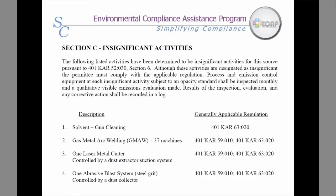Section C lists the insignificant activities. Insignificant does not mean they can be forgotten about — you may still have requirements to report them in your EIS and list them on your semiannual and annual reports. As stated in the permit text, the permittee must comply with regulations, and processes and emission controls subject to the opacity standard shall be inspected monthly with qualitative visible emissions recorded in a log. Also, those keeping a 12-month rolling total must include solvents used for cleaning guns listed in insignificant activities.